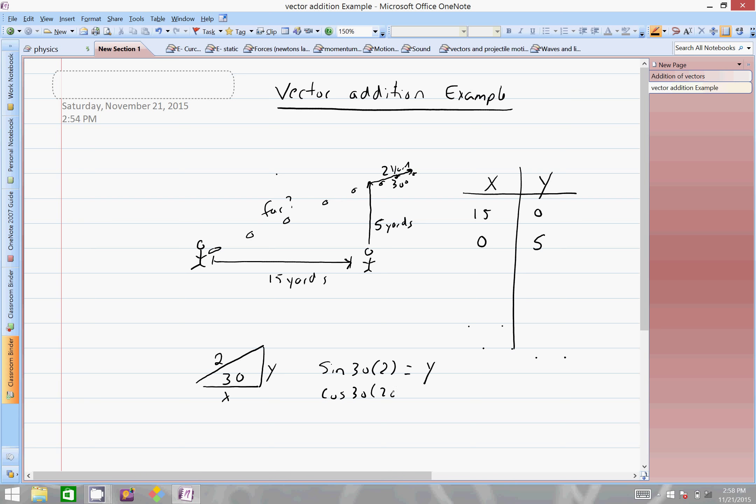And then the next one we have this angle here, 30 degrees. In this component we have an x component and a y component. This is 2 yards. Let's use some math: the sine of 30 degrees times 2 should give us our y component, and the cosine of 30 times 2 should give us our x component.